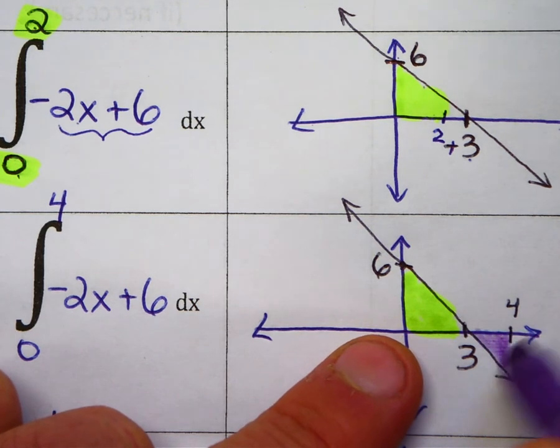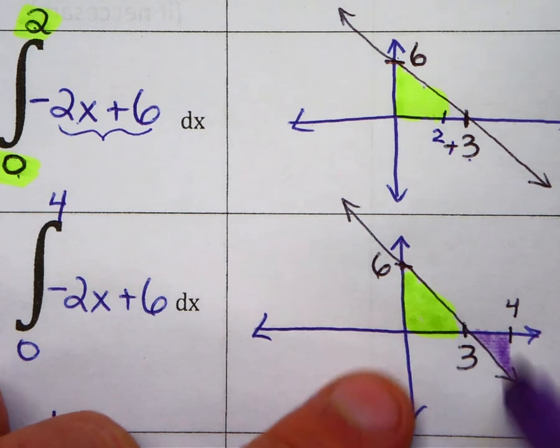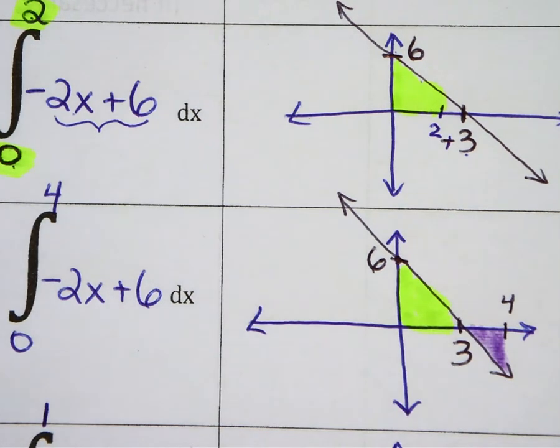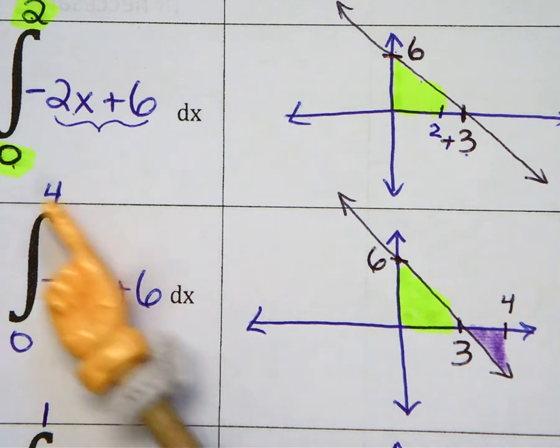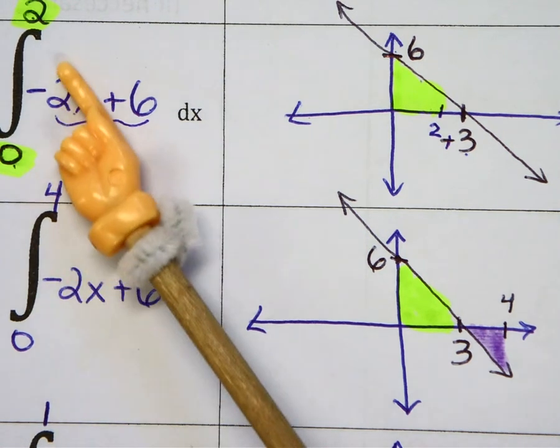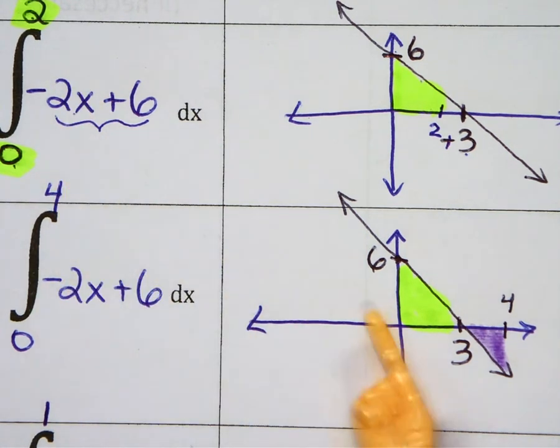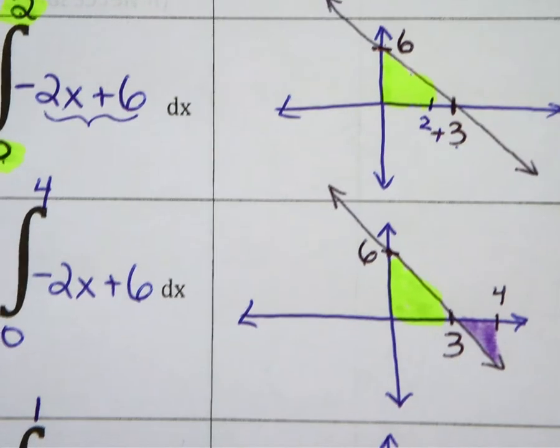So I have a little yellow area above sea level and a purple area below sea level. That's all because the upper bound was changed from two to four. Therefore, I have to shade more area. So those are two linear equations.